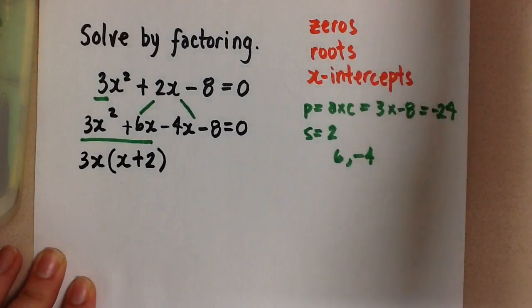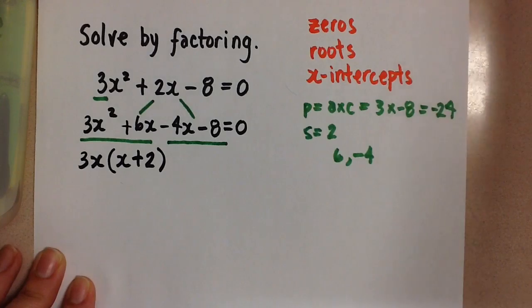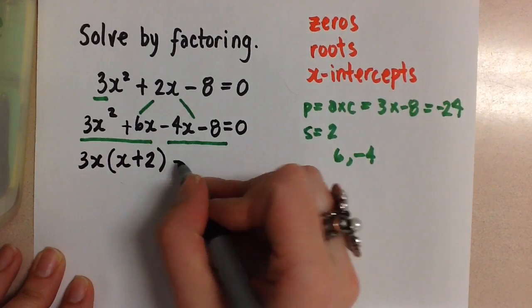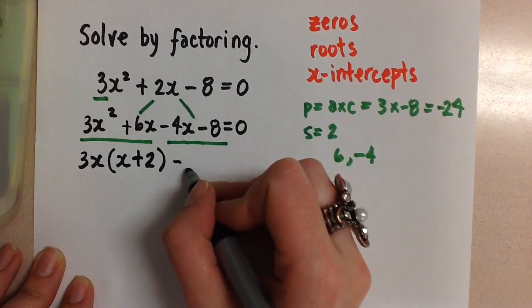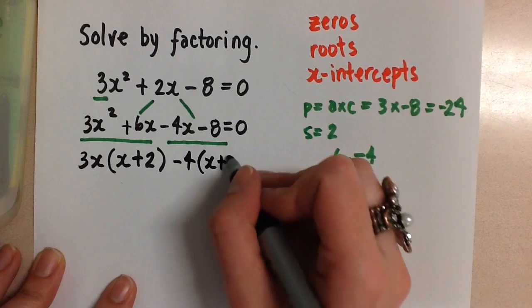Then I'm going to factor the second two terms by pulling out a negative 4. And that leaves me with x + 2.